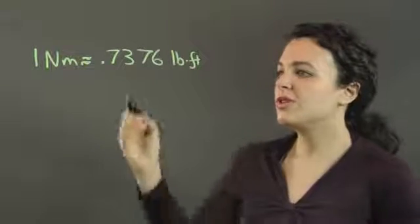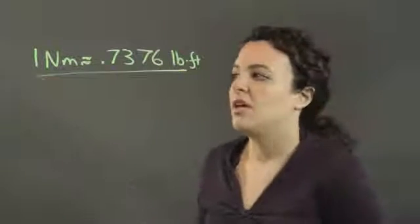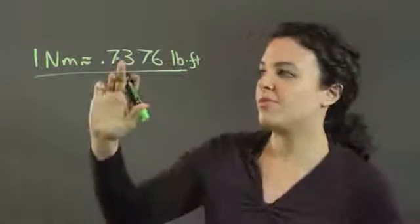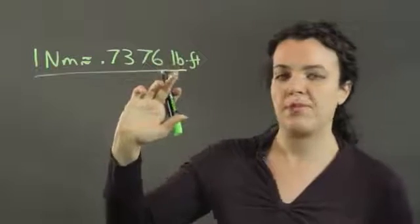So this is what you need for your conversions. If you have any number of Newton meters, for every Newton meter, you're going to have 0.7376 pound-feet.